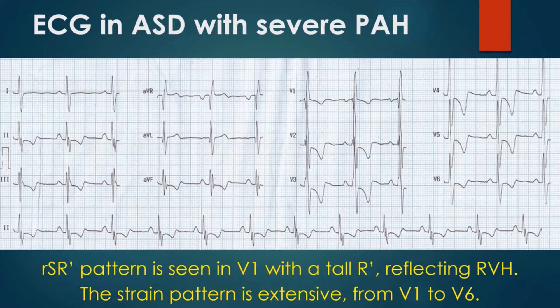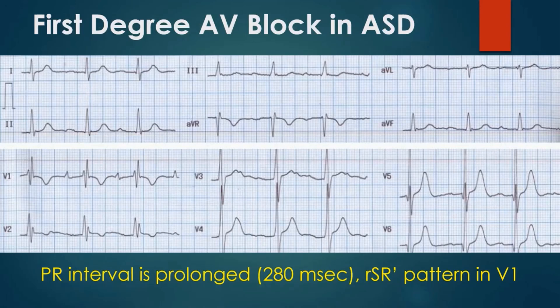R, S, R-prime pattern is seen in leads 3 and AVF as well. An additional S-prime wave in leads 2 and AVF, and notching of the downstroke of the R-prime in lead 3, suggest fragmented QRS as per the new terminology. The PR interval is prolonged and measures 280 ms. There is additional incomplete right bundle branch block with RSR-prime pattern in V1 and a QRS width of 110 ms. This combination of first-degree AV block with incomplete right bundle branch block is seen in familial atrial septal defect, transmitted in an autosomal dominant pattern, meaning 50% of first-degree relatives have a chance of having atrial septal defect.